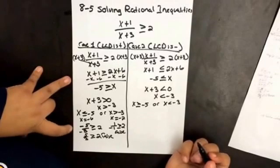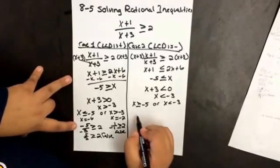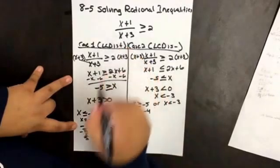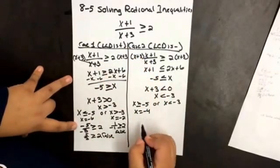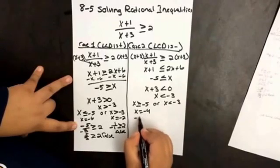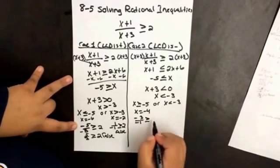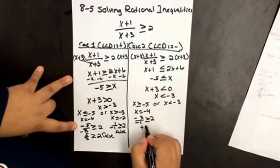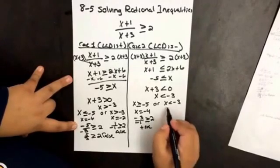Let's test those values. What if we test x equals negative 4? When we plug it into the original inequality, we end up with negative 3 over negative 1. Is that greater than or equal to 2? Yes, that's true. So x equals negative 4 works.